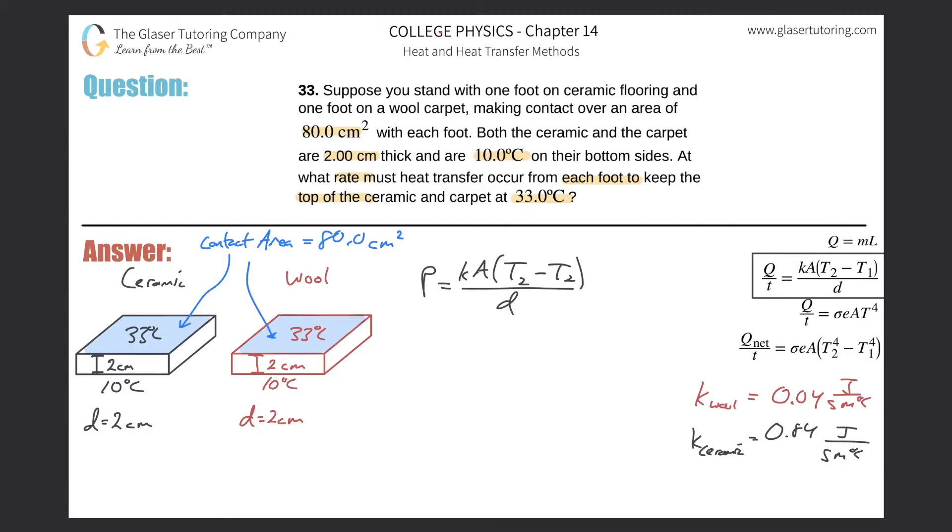Now basically what I need to do is calculate this for both. And both of these are constant, right? The area for each is constant. The temperature change was constant and the thickness is constant. The only way it's going to change between the two is the K value. And if you notice ceramic is higher than wool. So that means that the power is going to be greater. So let's just calculate it quickly. So this is 0.84 times the area. What did they give us? 80 square centimeters, but we need to convert that into square meters, right? So we have to basically take this 80 and then divide it by 100 squared. Multiply that by the temperature difference. I don't care if you take the bigger minus the smaller or the smaller minus the bigger, it's just going to be a difference in sign, but the magnitude is going to be the same.